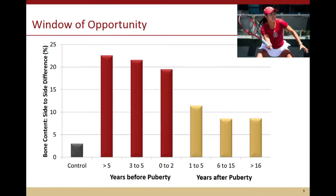I mentioned a window of opportunity, and this echoes back to what Tom said about everything that happens outside the skin. When we think about factors that affect bone development, we have things like genetics and physical activity. We've learned so much from the model of racquet sports players, because the genetics, the nutrition, the vitamin D levels are the same in your left arm and right arm. But depending on how much you expose the bone to biomechanical loading, you can get big differences in side-to-side bone mineral content.